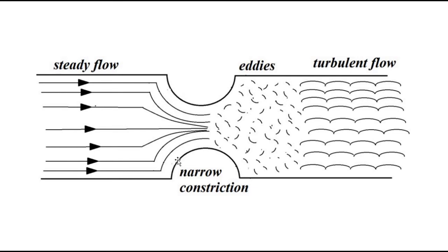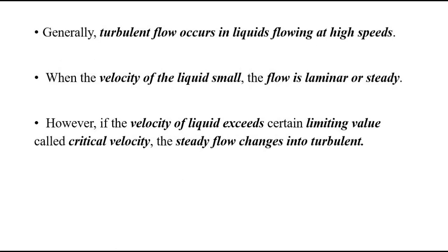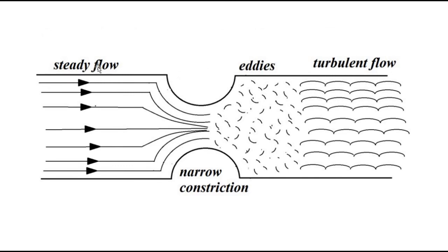Generally, when liquids travel at low velocities they behave as streamlined flow. But as the speed is increased, streamline flow gets converted into turbulent flow. This is achieved by a narrow constriction, which increases the velocity of the fluid by rushing a large volume of liquid through a small cross-sectional area, accelerating it and converting the flow to turbulent.